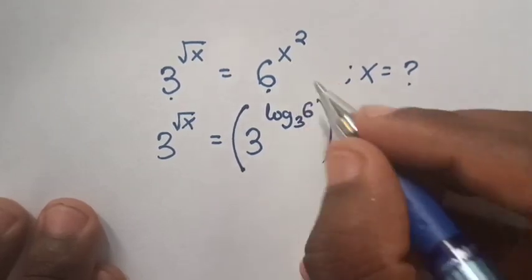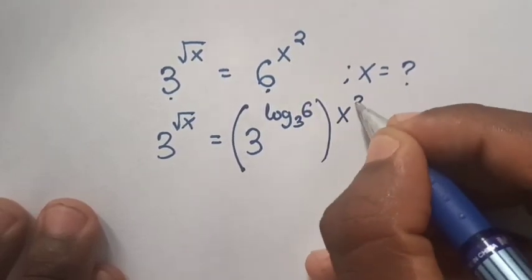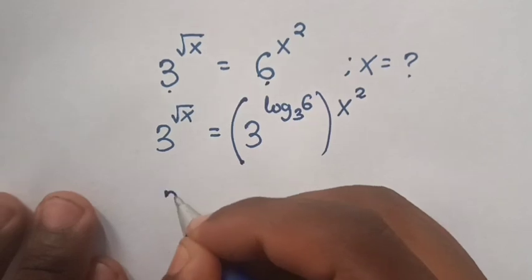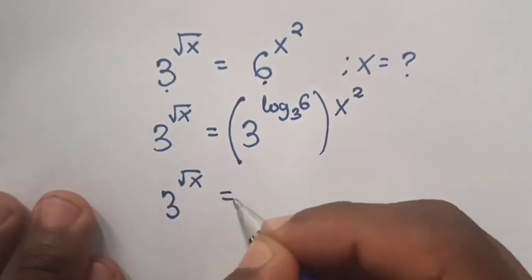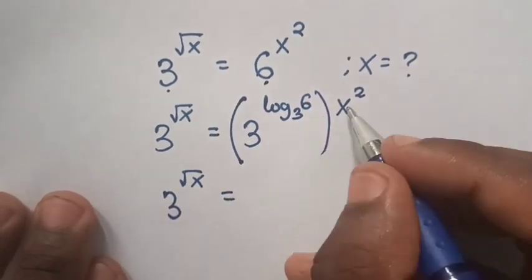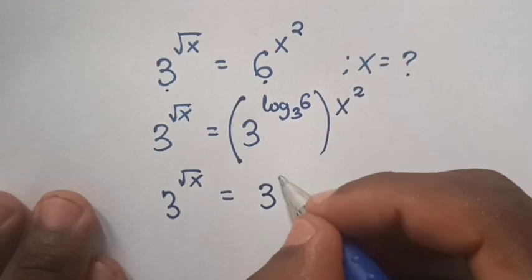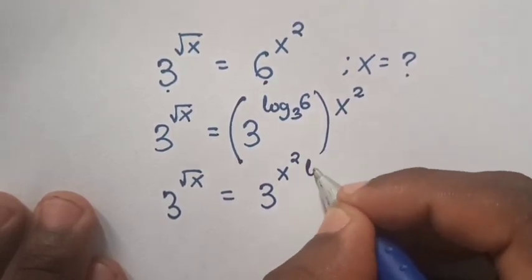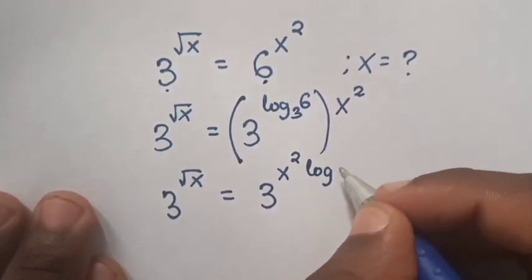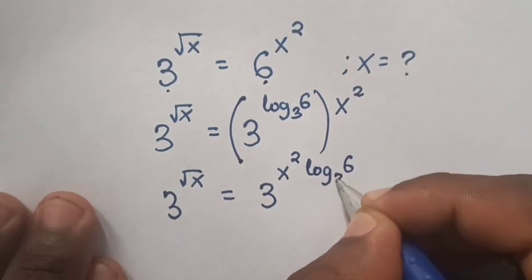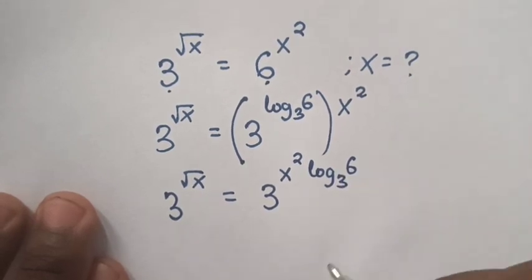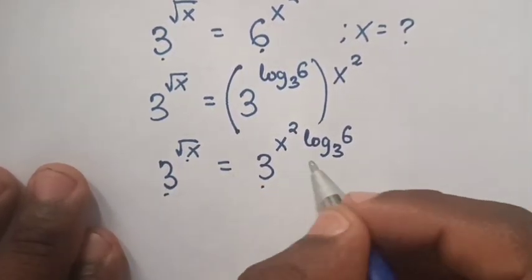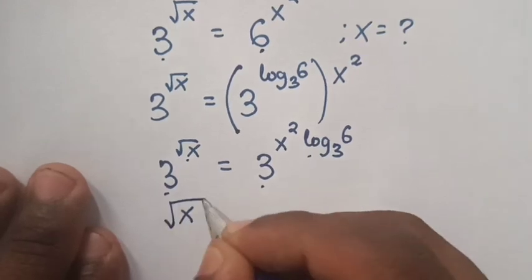Remember the power here is x square. Now our equation will be 3 power square root of x is equal to 3 power x square log 6 base 3, where we multiply the powers.